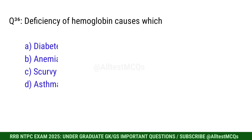Q36. Deficiency of hemoglobin causes which disease? Correct option is B. Anemia.